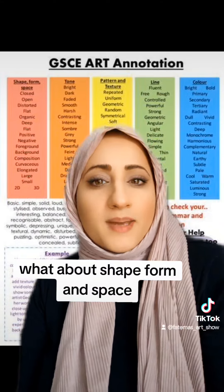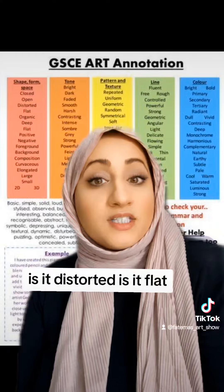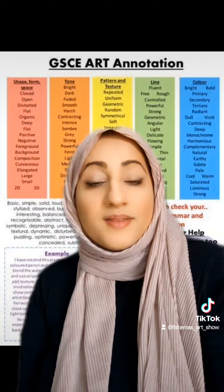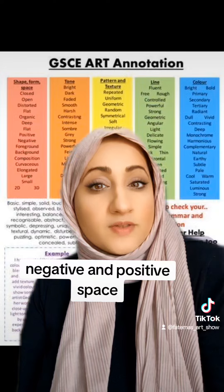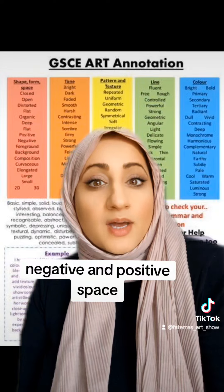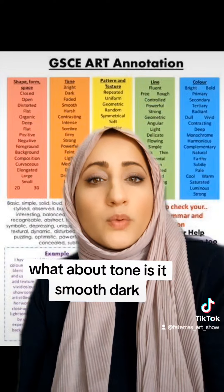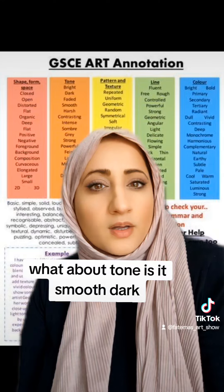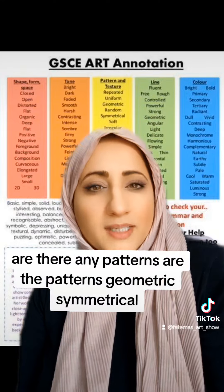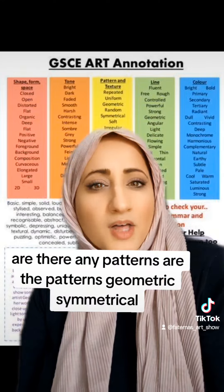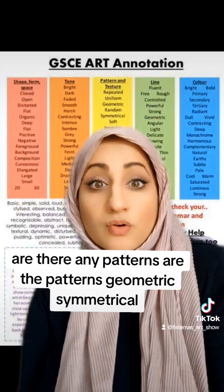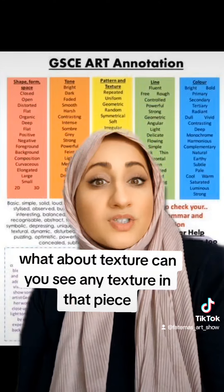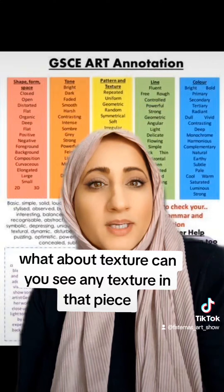What about shape, form, and space? Is it distorted? Is it flat? Consider negative and positive space. What about tone — is it smooth, is it dark? Are there any patterns? Are the patterns geometric or symmetrical? What about texture — can you see any texture in the art piece?